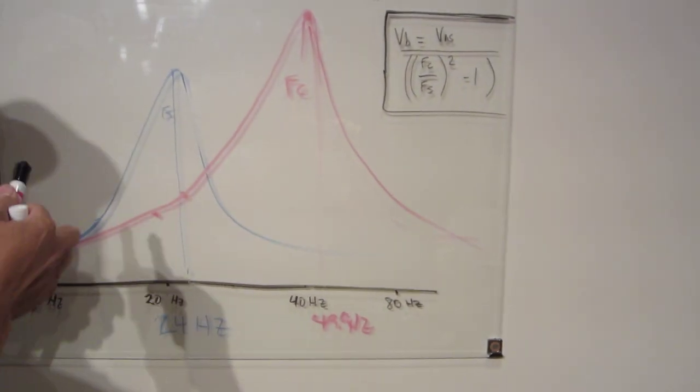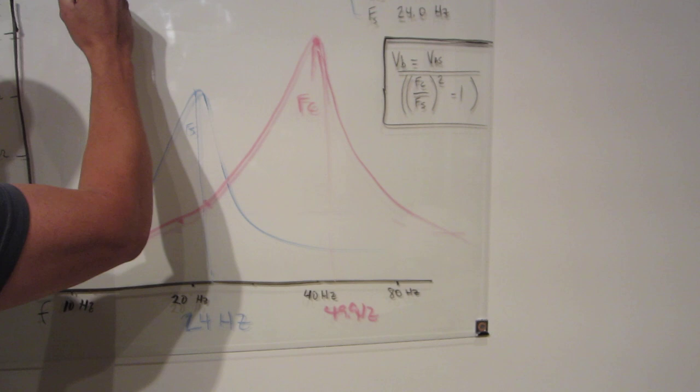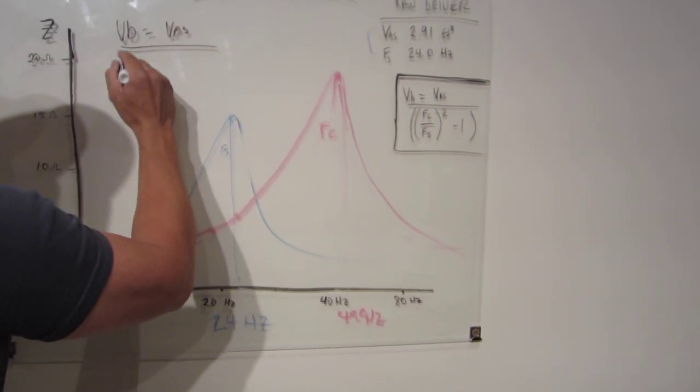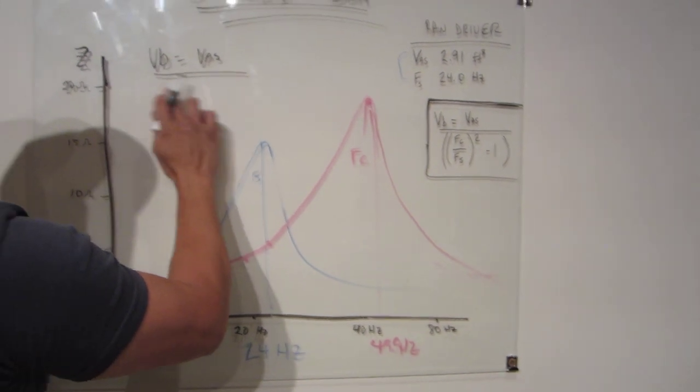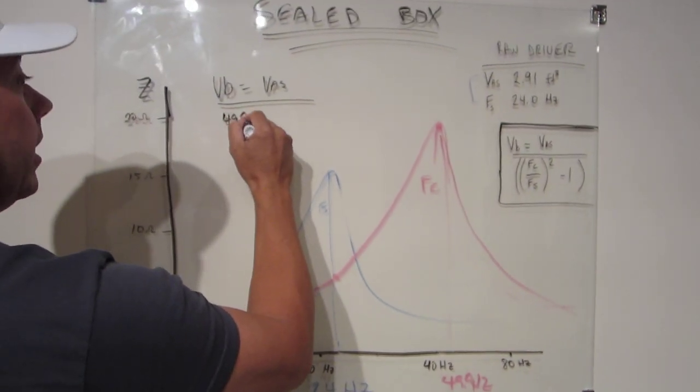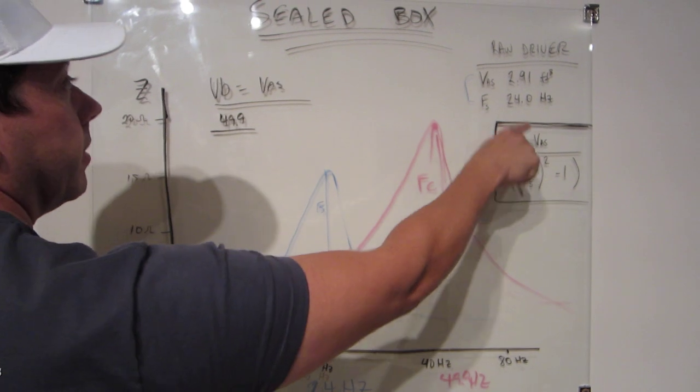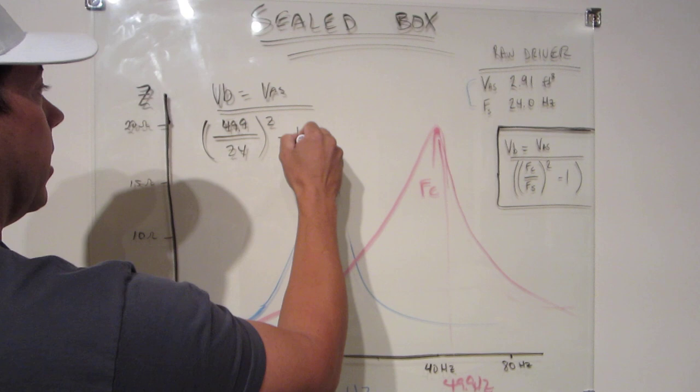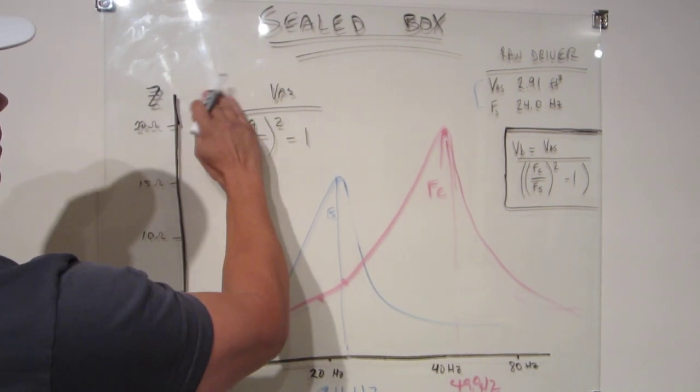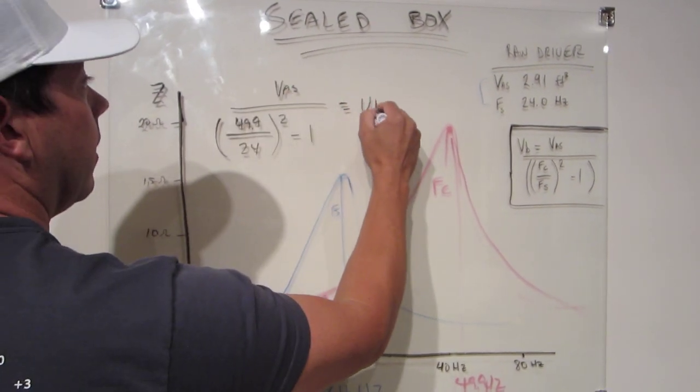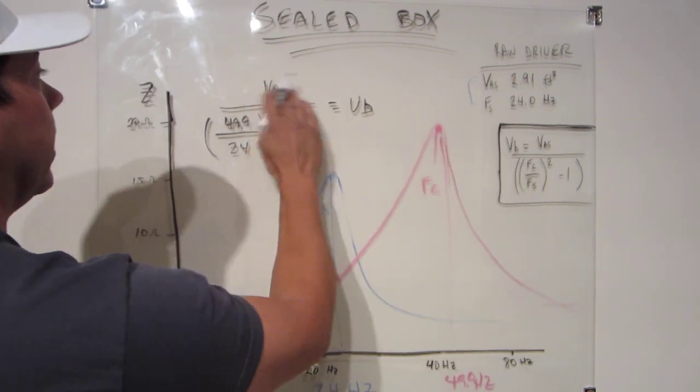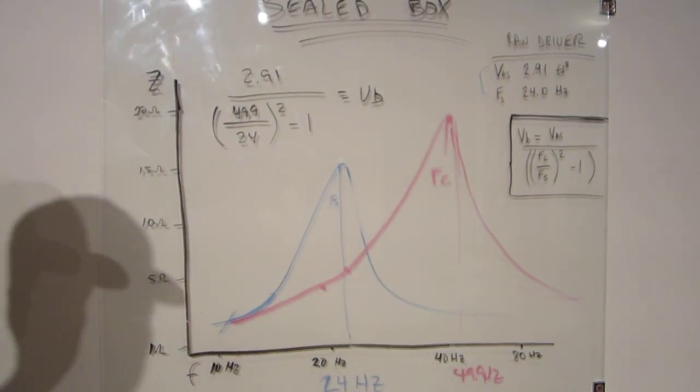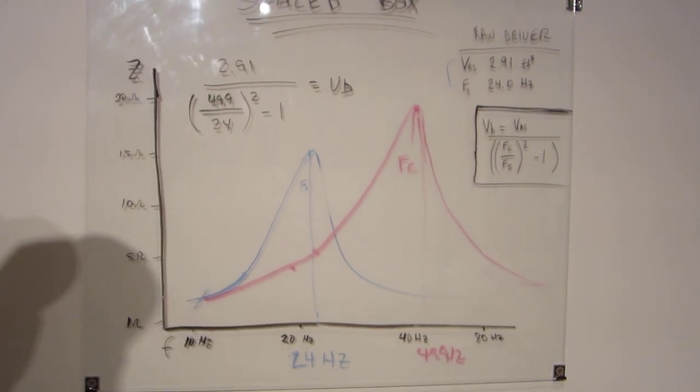Now, we just plug into our formula and see. VB equals VAS over this, which was 49.9 over our FS, which was 24, square all this, subtract 1, this over here. VAS was 2.91. So, we just plug all that into our calculator to see what we get.